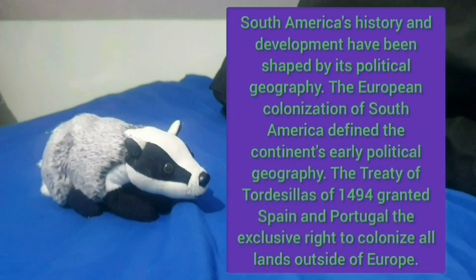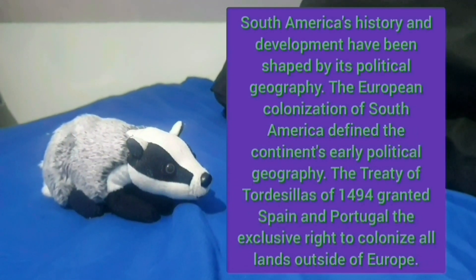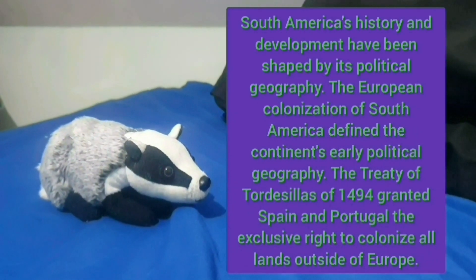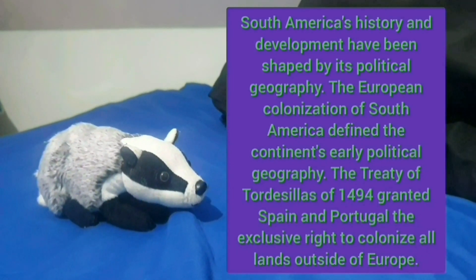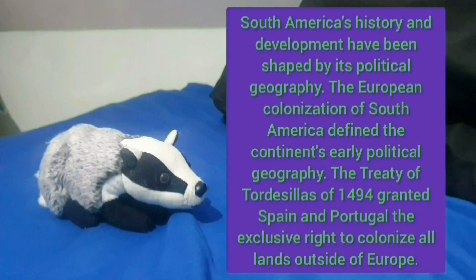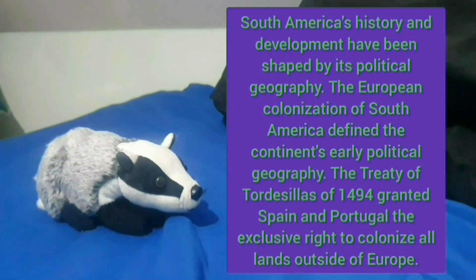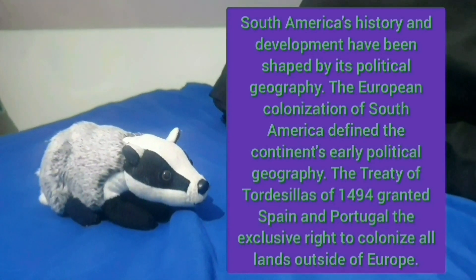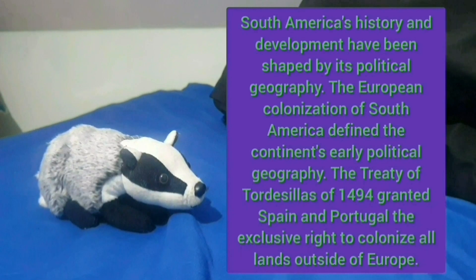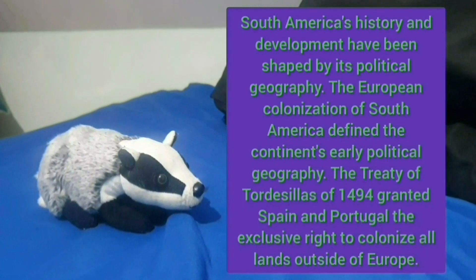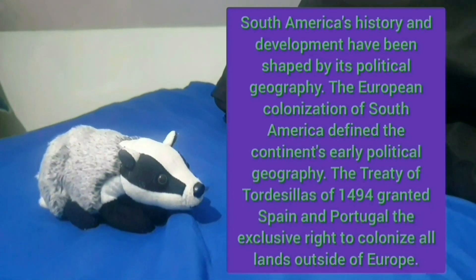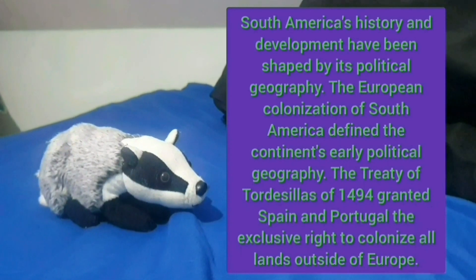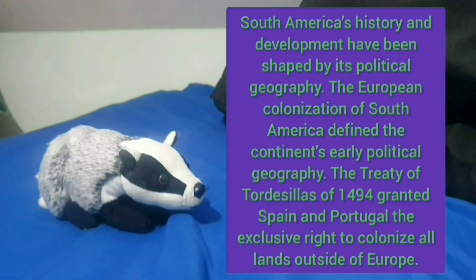South America's history and development have been shaped by its political geography. The European colonization of South America defined the continent's early political geography. The Treaty of Tordesillas of 1494 granted Spain and Portugal the exclusive right to colonize all lands outside of Europe.